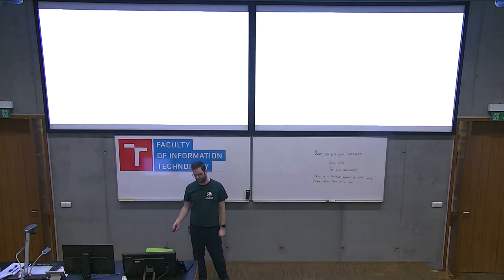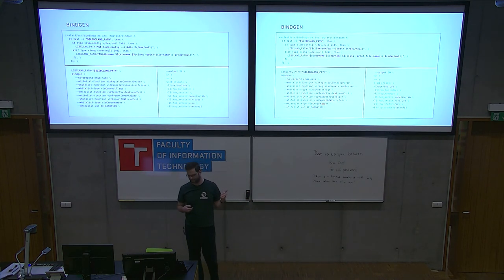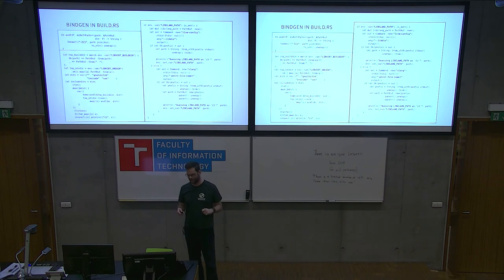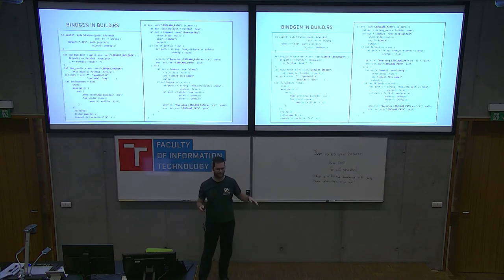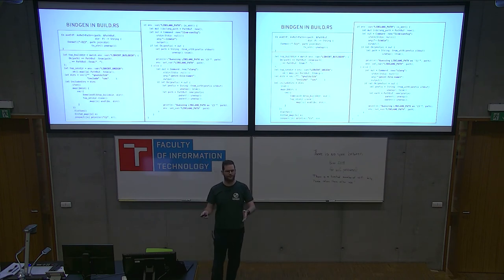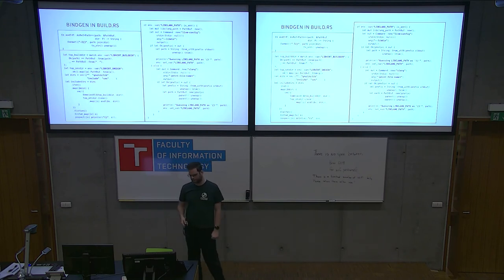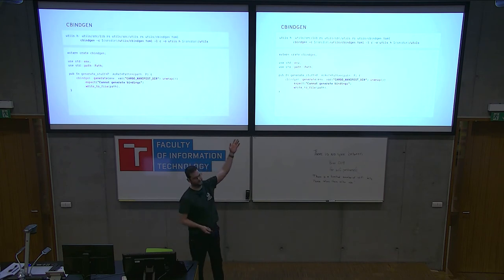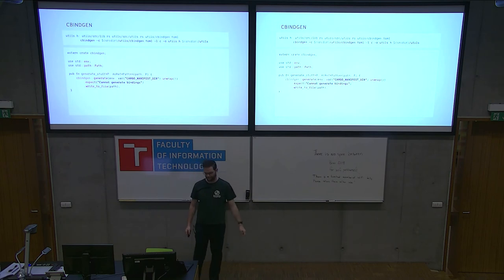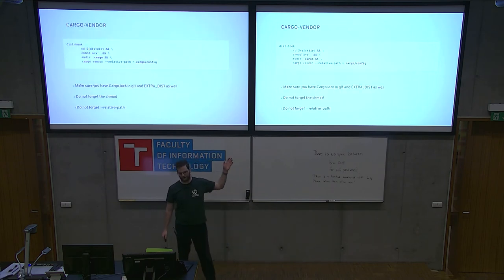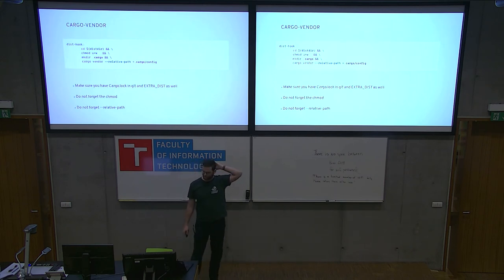Some of the build stuff: this is how it looks if you want to use bindgen from a makefile — it still does not properly work. This is how it looks in build.rs, where it actually works better. There are some bugs with bindgen in make, and you're supposed to use it from build.rs, but you can't use it from build.rs if you don't want it as a build dependency in your dist tarball. Cbindgen is easier — this is how you use it from make and from build.rs, and it works with dist check, vpath builds, and so on. For cargo vendor, just make sure you make the path writable per automake documentation, and use a relative path.